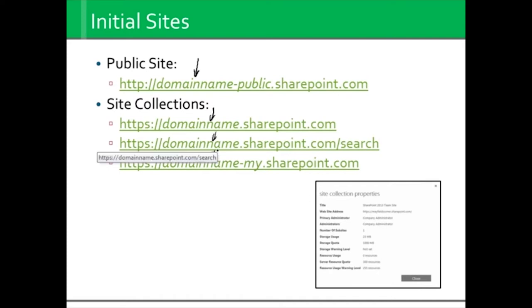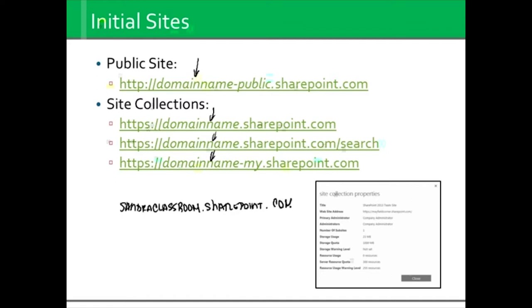If my domain name is Sandra Classroom, my site collections — if I want to go to the default team site for my organization — it would simply be sandraclassroom.sharepoint.com. I can access this SharePoint site collection from anywhere in the world as long as I have an internet connection and a valid login. That's what we mean by domain name.